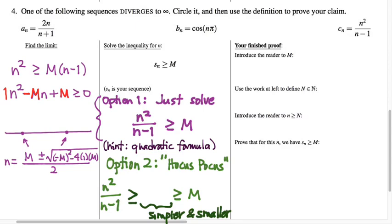Simplify that quantity under the radical a little bit. And you end up with M squared minus 4M. There's really not anything we can do with that to make it nicer. And so at the end of the day, this is what we get. This is the value, this is the real number if you like, that makes this expression equal to 0.